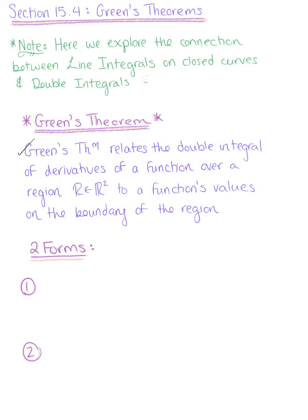In particular, we're looking at two specific forms in this section. The first form of Green's Theorem is the circulation form.